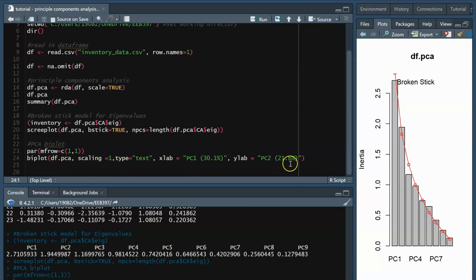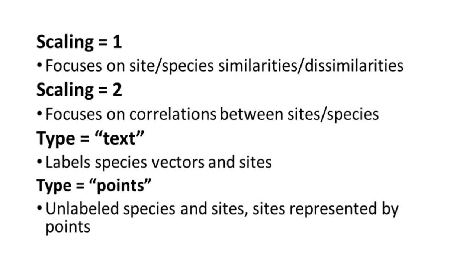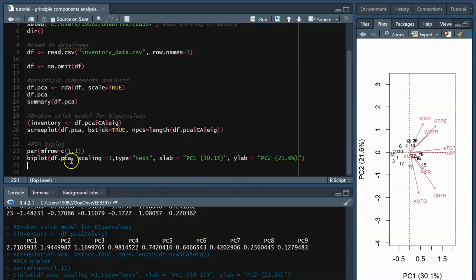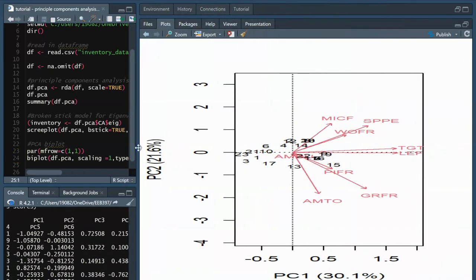Here we use scaling set to 1 because it focuses on the sites or species we are interested in looking at, and highlights the similarities or dissimilarities among species. You can use scaling set to 2 if you are more interested in correlations between sites or species. I set type to text to label my site numbers and species names on the biplot. You could also set this to points if you'd rather it appear unlabeled as a point. I also decided to name my x and y axes according to their principal component, and in parentheses, the percent of variation explained by that axis.